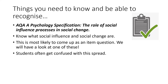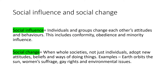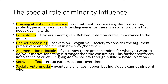A lot of students get confused with this topic, so hopefully I'll be able to break it down. Social influence is where individuals and groups change each other's attitudes and behaviors — this includes conformity, obedience, and minority influence. Social change, which we'll focus on here, is when whole societies — not just individuals — adopt new attitudes, beliefs, and ways of doing things. Examples include the idea that the earth orbits the sun, women's suffrage, gay rights, and environmental issues.